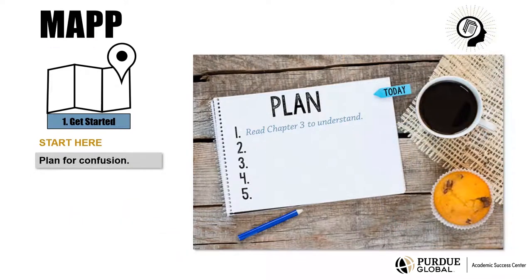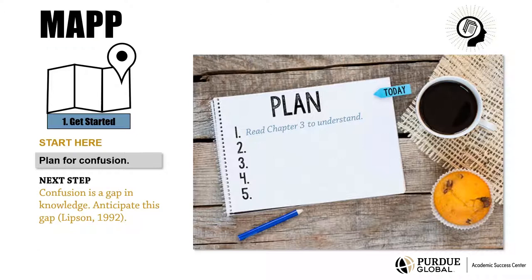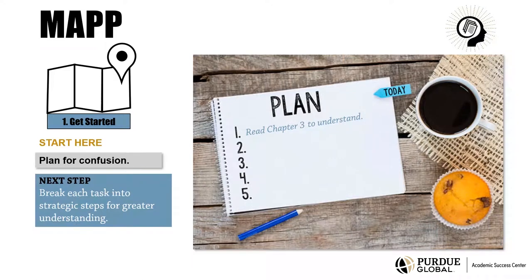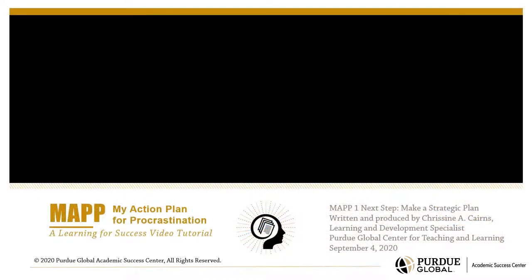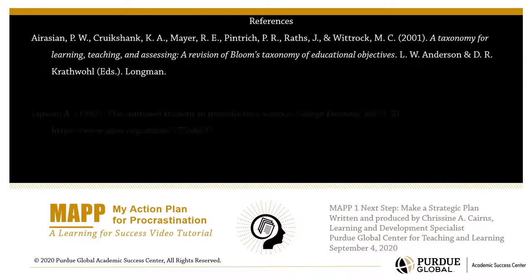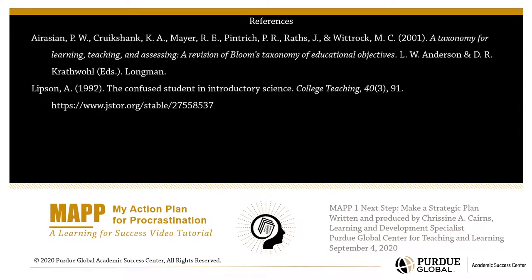Also plan for not understanding. Confusion is not a failure to learn, but a gap in knowledge. Anticipate this gap and manage it by breaking each task into strategic steps such as re-reading the chapter, re-reading the seminar notes, listing the questions you want the reading to answer, and as you read, take notes and reflect on your understanding. These are the next steps to learning success.